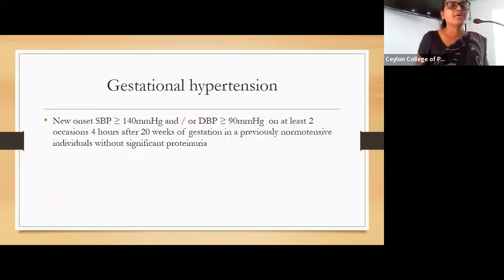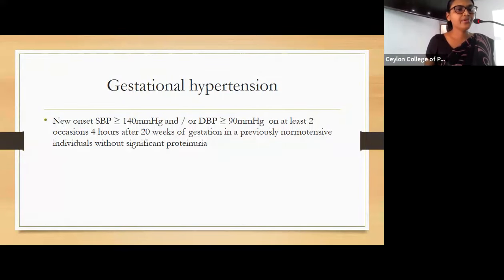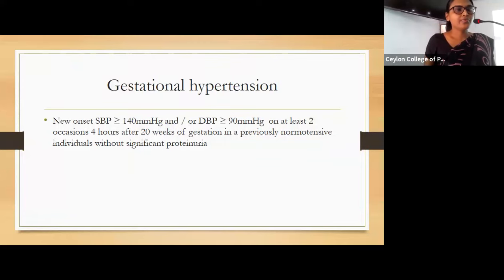The definition of gestational hypertension is systolic blood pressure more than or equal to 140 or diastolic blood pressure more than 90 mmHg, on at least two occasions four hours apart, after 20 weeks of gestation in a previously normotensive individual without significant proteinuria.